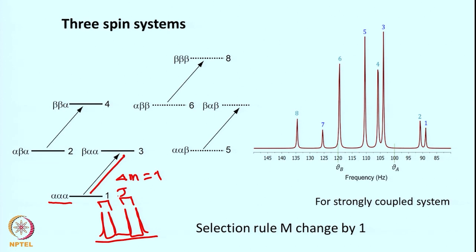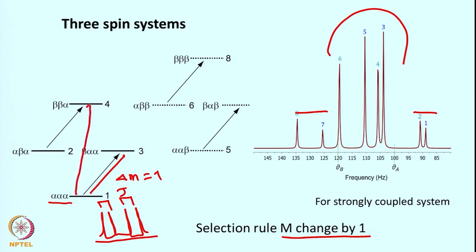For a strongly coupled system, as we discussed, the lines will be of unequal intensity and the central lines will have more intensity than the outer lines. In all these cases, delta M will change by 1, so single quantum transitions will happen. There is a possibility of double quantum transitions — forbidden in NMR — but for now we stick to single quantum transitions. For AB, AX, or ABX systems, we are mostly looking at single quantum transitions and the lines that arise because of these transitions.